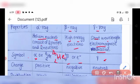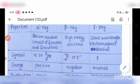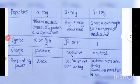Coming to charge: the charge of alpha ray is positive, the charge of beta ray is negative, and in the case of gamma ray, the charge is neutral.